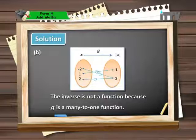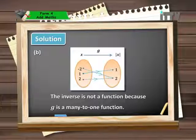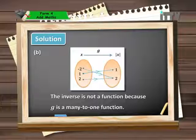Part B tells a different story. The relation g maps negative 2, 1, and 2 from the object set onto 1 and 2 only from the range set under the relation of absolute value of x. Two objects, negative 2 and 2, are mapped onto only one image, which is 2, giving a many-to-one relation. Reversing the arrows shows that the value 2 goes back to both negative 2 and 2. The inverse maps a value back to two images, making it one-to-many and therefore not a function.